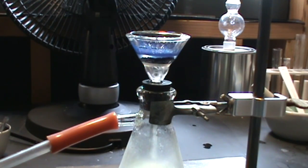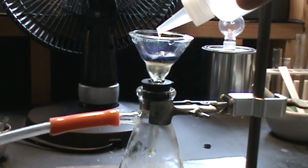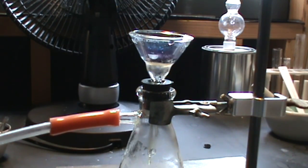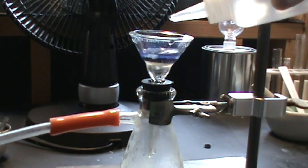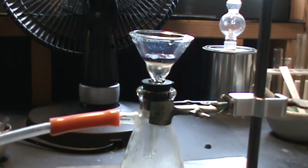Rinse once more with distilled water, and then discard the filtrate. With the filter flask now empty, keep washing the product with acetone until the filtrate is colorless. It's hard to see with this camera angle, but the first several acetone washes yield a yellow filtrate.